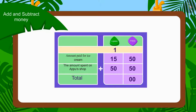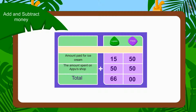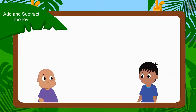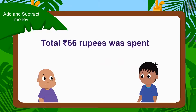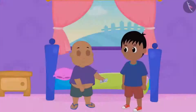And now, how much paise are left with us? Zero paise. Children, now can you add the total number of rupees? Well done, children — this is absolutely correct. 66 rupees in total. We have used addition to find these answers. In this way, Raju and Bablu spent a total of 66 rupees.